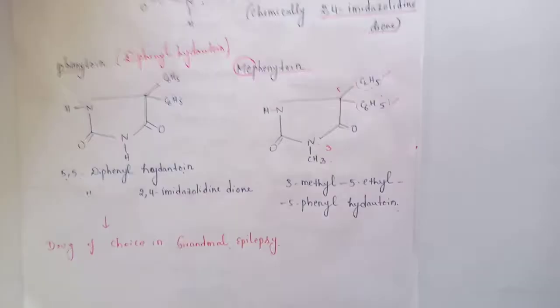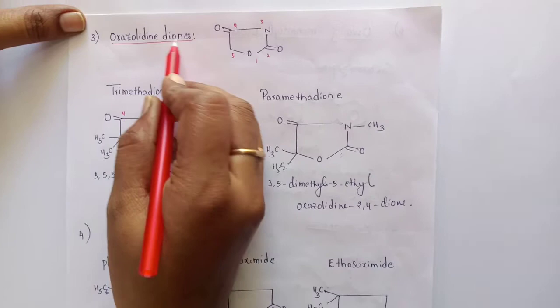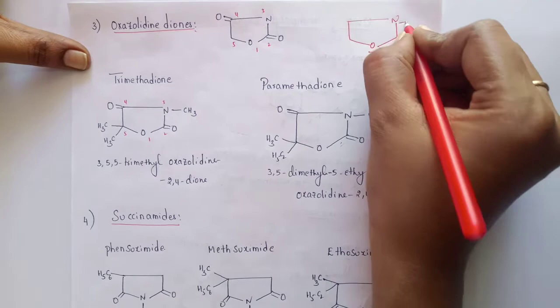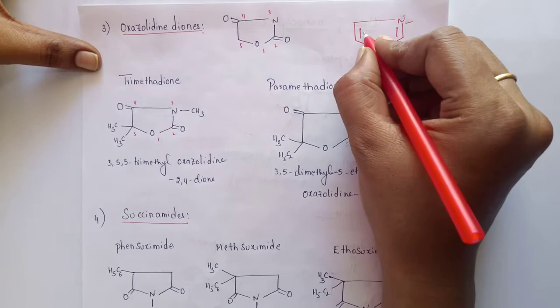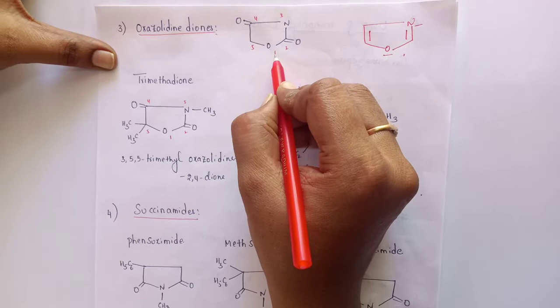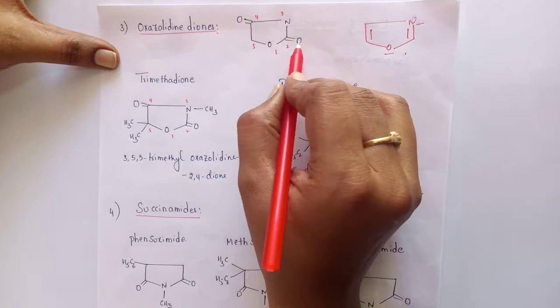The 3rd class of compounds are oxazolidinedione derivatives. Oxazole is a 5-membered ring possessing oxygen and nitrogen. Oxazolidine has no double bonds. 'Dione' indicates 2 ketones. For numbering, starting from oxygen (most electronegative): 1, 2, 3, 4, and 5. At the 2nd and 4th positions it possesses ketones. This is the basic structure of oxazolidinedione derivatives.